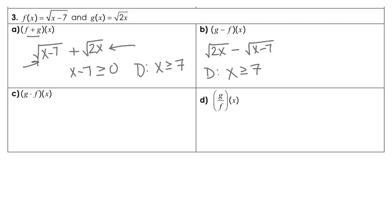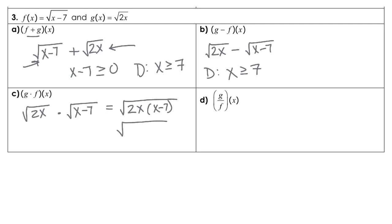Multiplying is going to change this. g of x — square root of 2x — times the square root of x minus 7. You can multiply under the radical, so you're going to have the square root of 2x times x minus 7, and then you can multiply that out to be the square root of 2x squared minus 14x. Looking at the domain, notice that the smaller amount was still x minus 7, so x still has to be greater than or equal to 7.